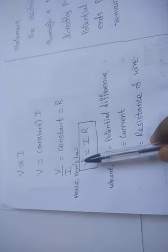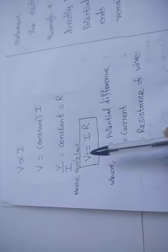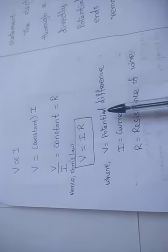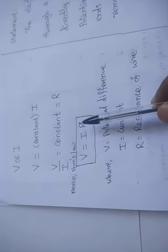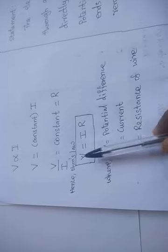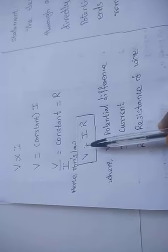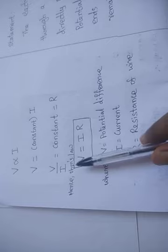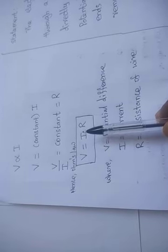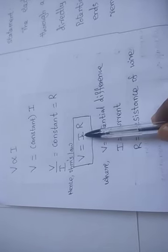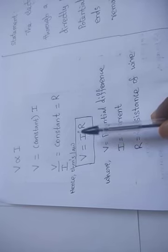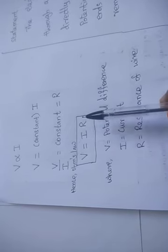Hence, we can write that Ohm's law equation is V is equal to IR, where V is equal to potential difference, I is the current, and R is the resistance. Whenever there is a change in potential difference — if you increase or change the potential difference value — there will be a change in current value; the current value will increase depending upon the resistance of the wire.